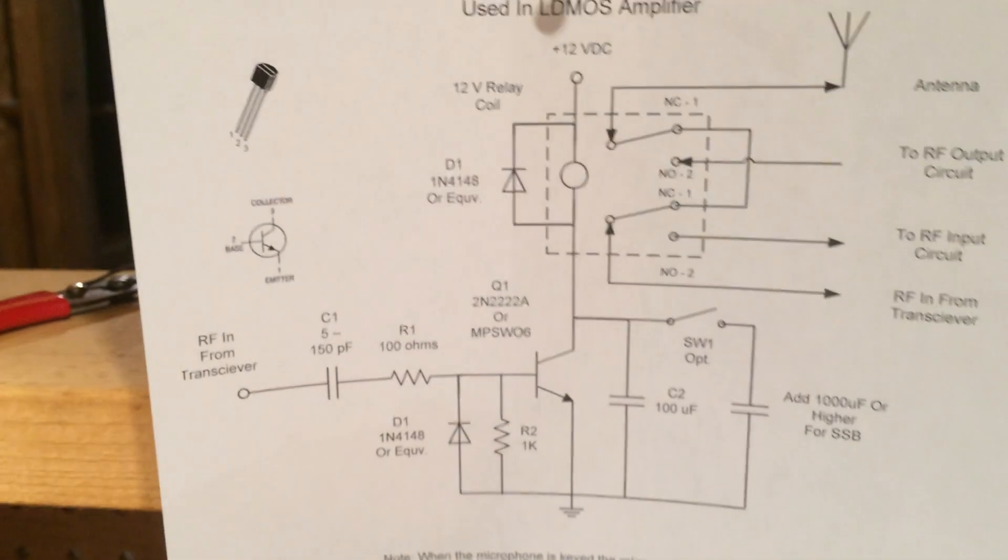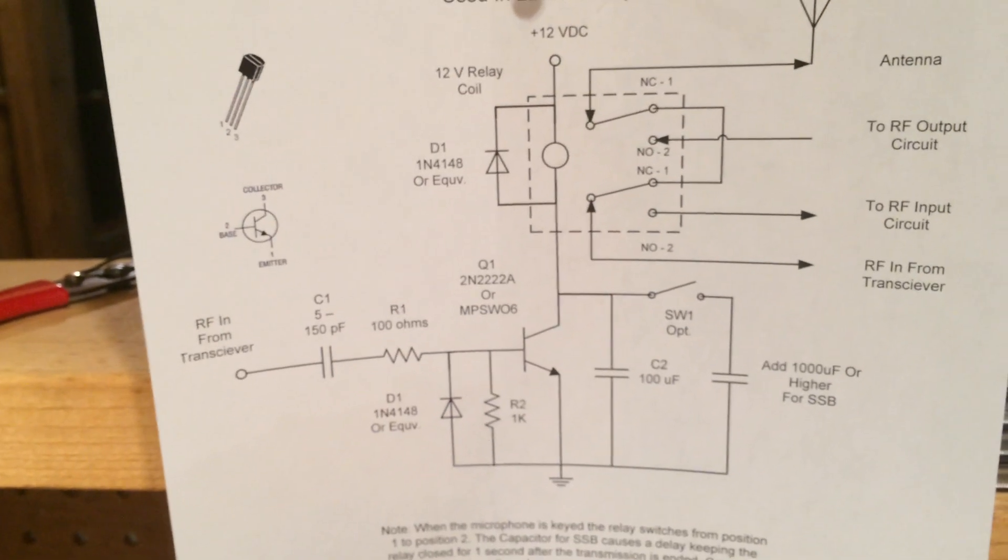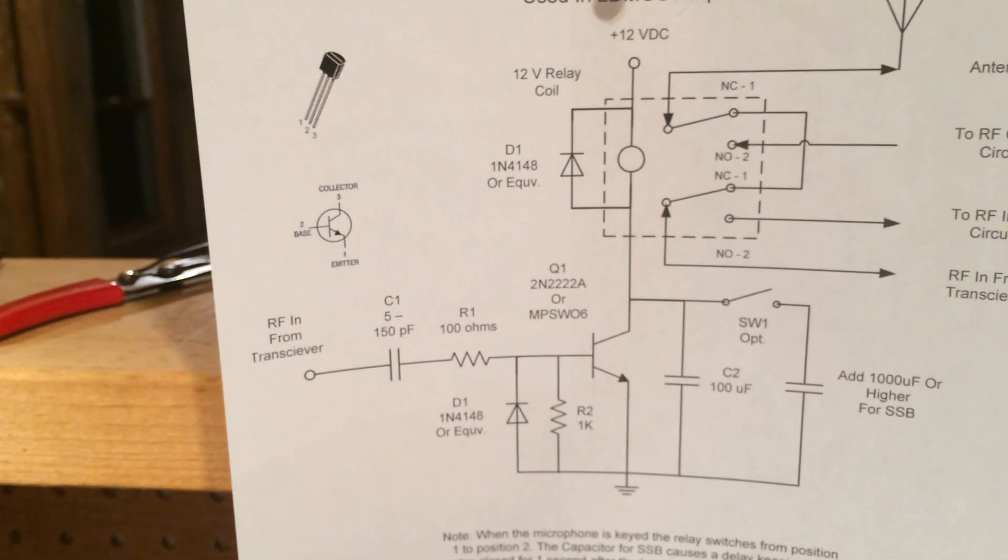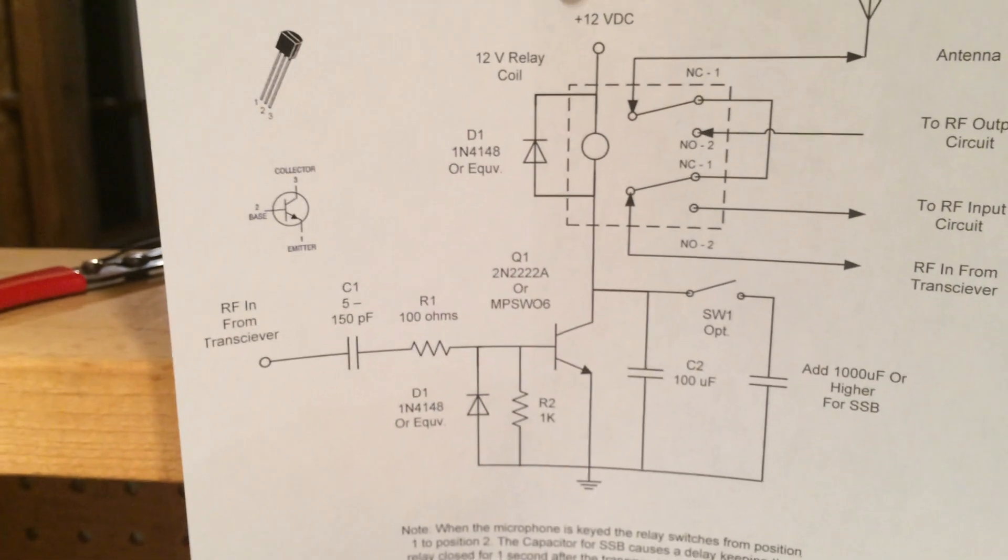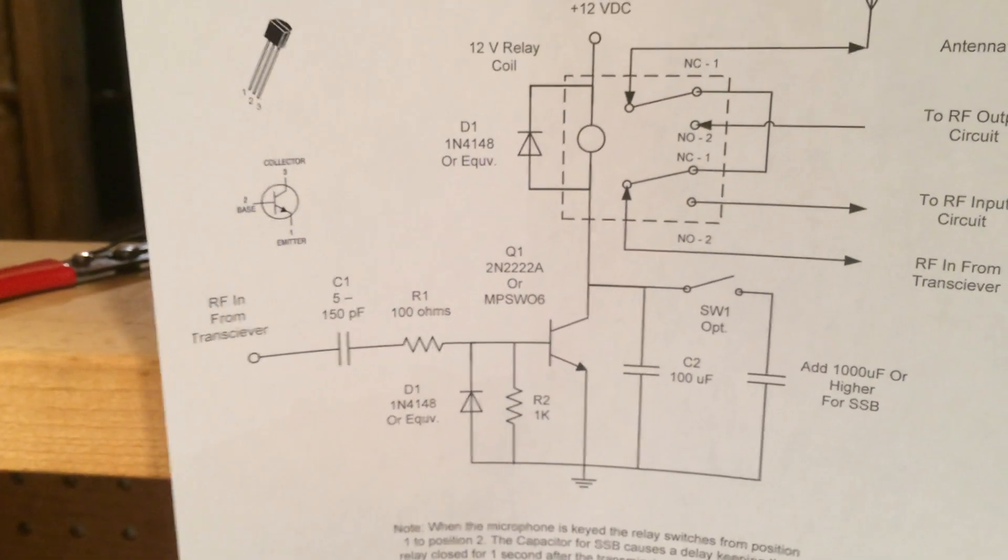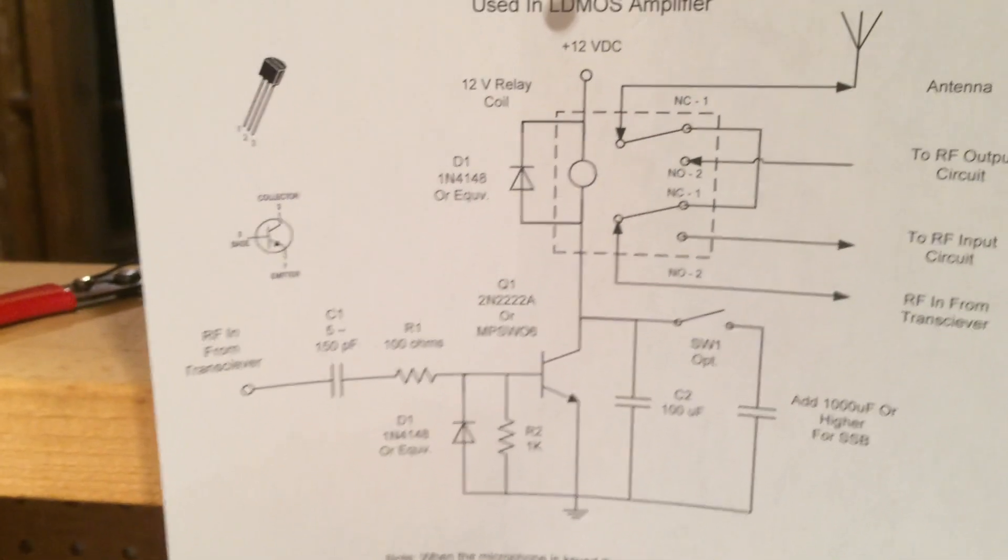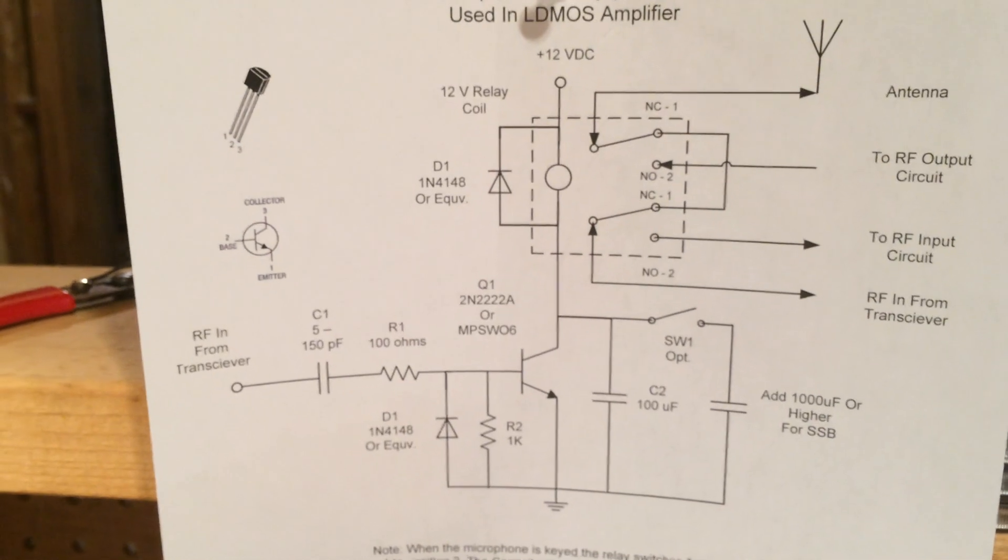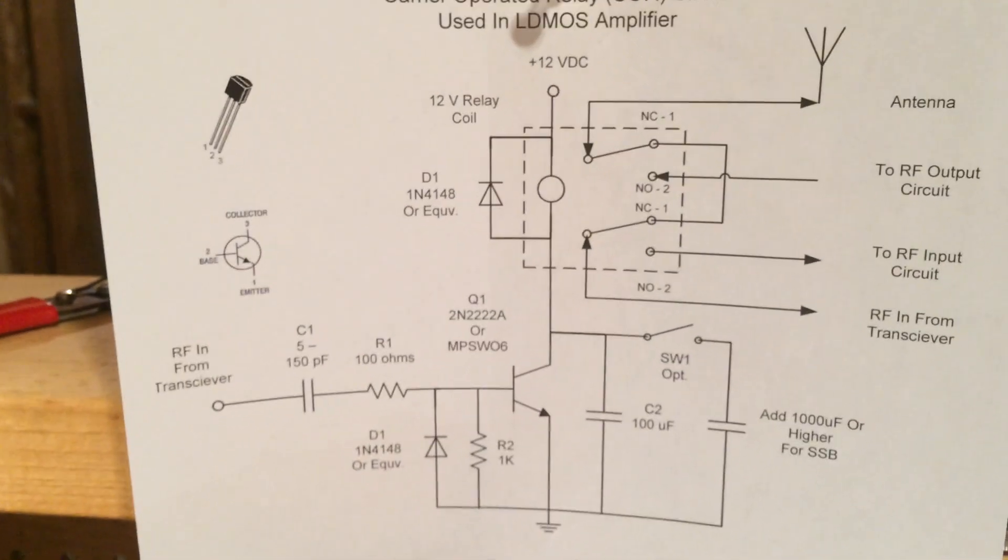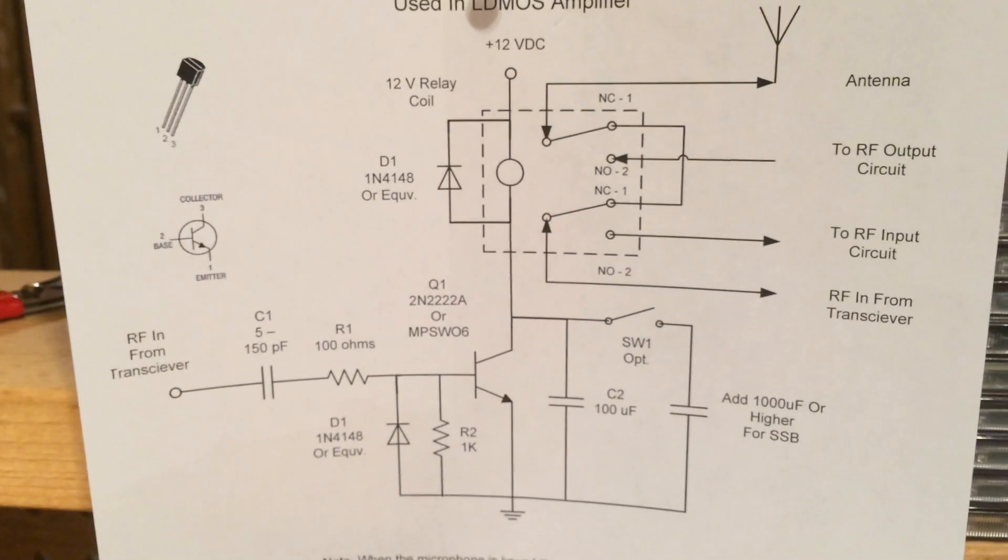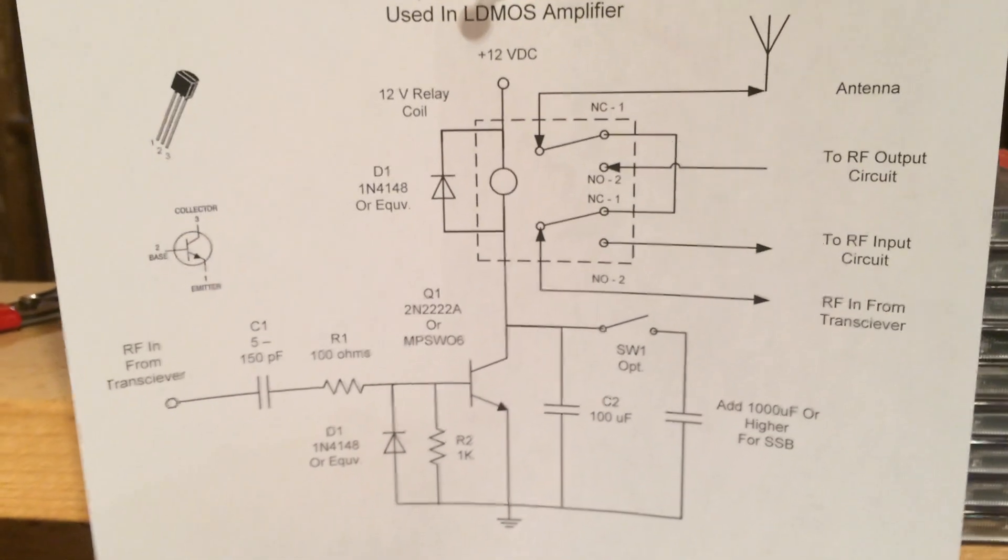I've got a schematic up here and you can see I got a sensing capacitor C1, then I have a resistor and a small switching transistor which switches the coil of the relay, and that in turn switches us from transmit mode to receive mode. So that's a conventional circuit. I think a lot of us are familiar with that.